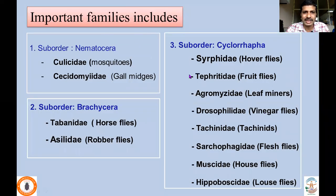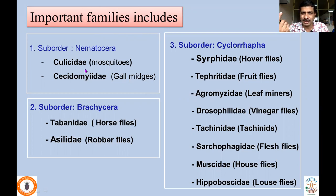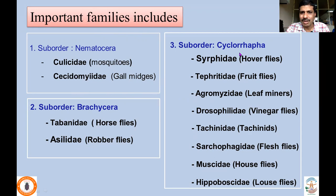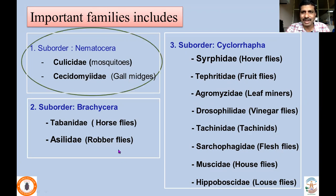We will discuss only a few economically important families from each suborder. From Nematocera: Culicidae (mosquitoes) and Cecidomyiidae (gall midges). From Brachycera: Tabanidae (horse flies) and Asilidae (robber flies). From Cyclorrhapha: Syrphidae (hoverflies), Tephritidae (fruit flies), Agromyzidae (leaf miners), Drosophilidae (vinegar flies), Tachinidae (tachinids), Sarcophagidae (flesh flies), Muscidae (house flies), and Hippoboscidae (louse flies).